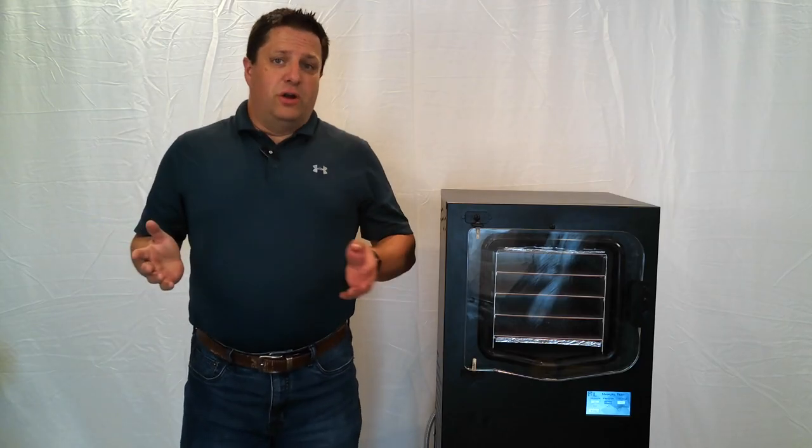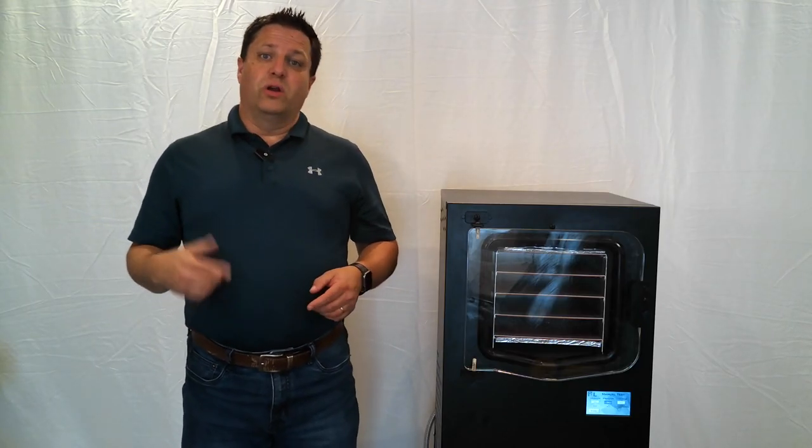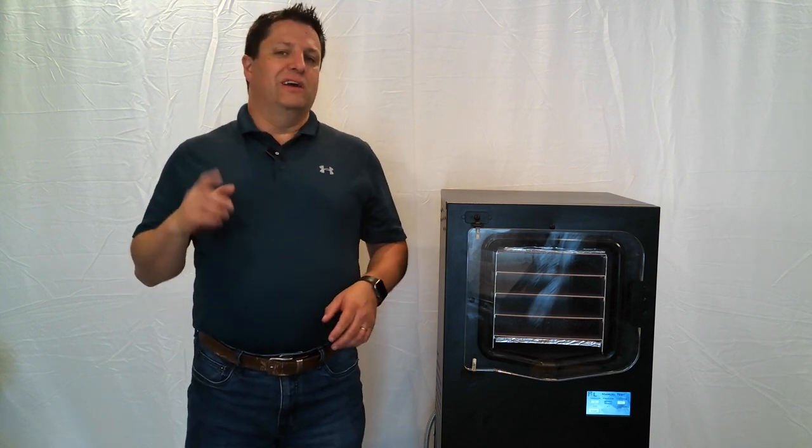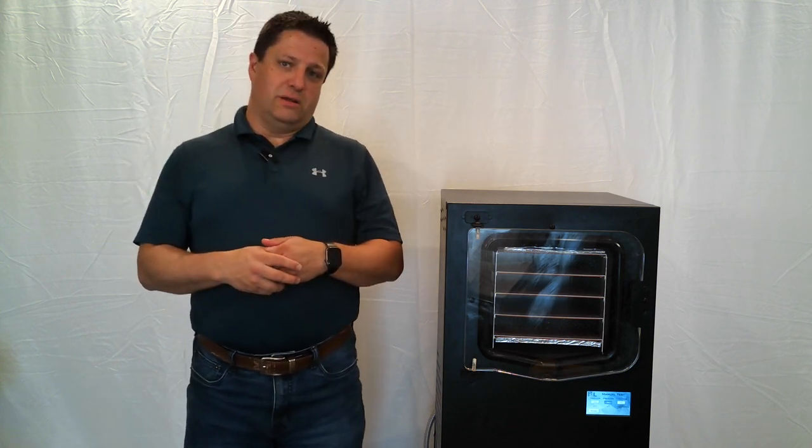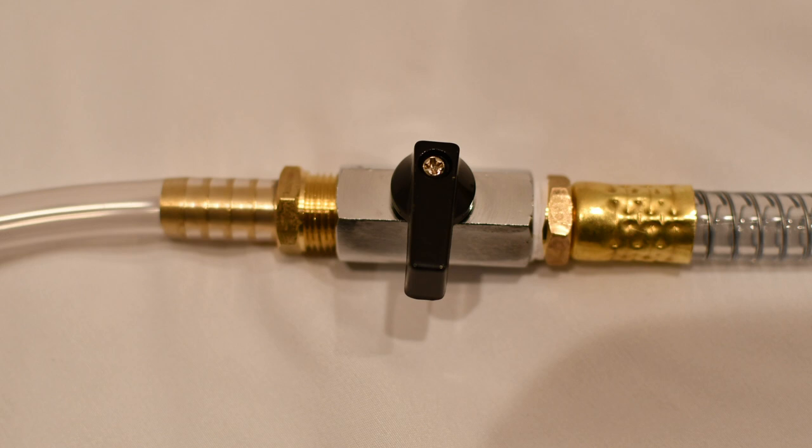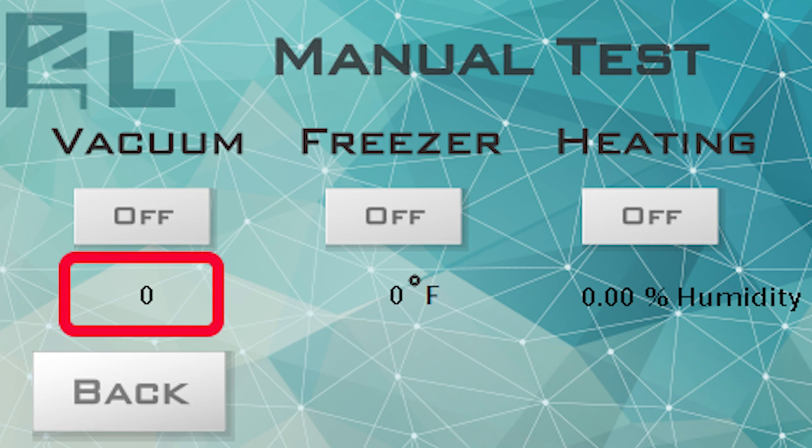Alright, it has been 30 minutes and our temperature has gone down quite a bit. We are going to test the vacuum, but do not turn off the freezer. If we turn off the freezer, then the moisture will begin to melt and affect the vacuum readings. Make sure the drain valve is closed. Make a mental note of the vacuum reading underneath the vacuum button. It will likely be somewhere above 15,000. Now, turn the vacuum on.